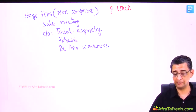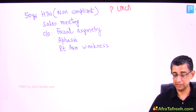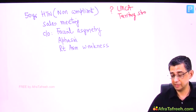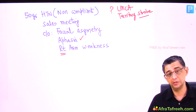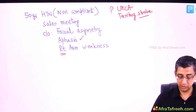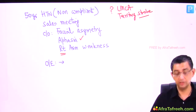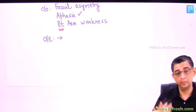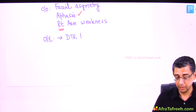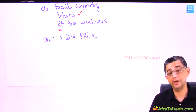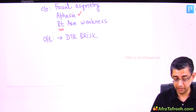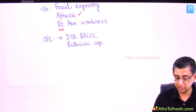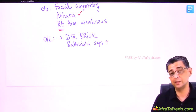It's a left MCA territory stroke because of the combination of aphasia and right arm weakness. He is rushed to hospital. On examination: brisk reflexes — when the brain is damaged, inhibitory control is lost so reflexes become faster. The patient also develops a Babinski sign, or extensor plantars. Variants include Chaddock sign and Gordon sign.